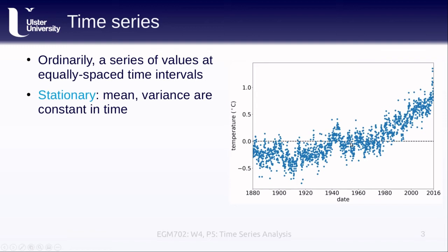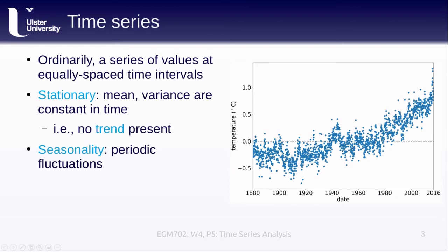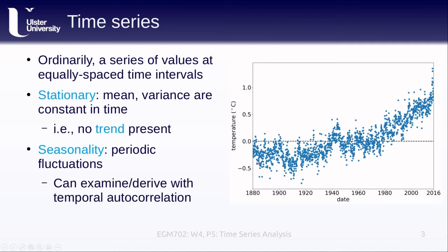These time series can have different properties. For example, a time series can be stationary — we saw this when we talked about spatial statistics — meaning the mean and the variance of the time series are constant in time and not changing at different points. Another way of saying this is that there is no trend present in the data with respect to time. We can also think about seasonality, which is periodic fluctuations in the data — for example, temperature has higher values in summer and lower in winter.